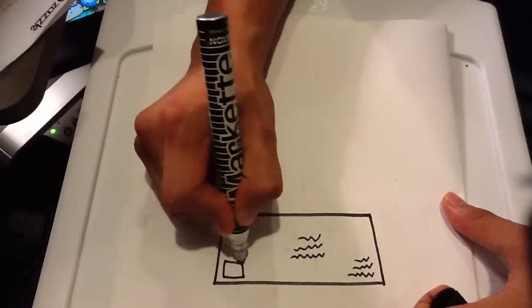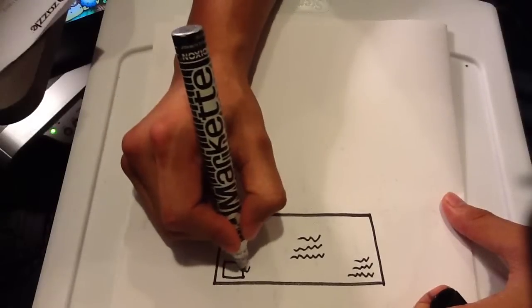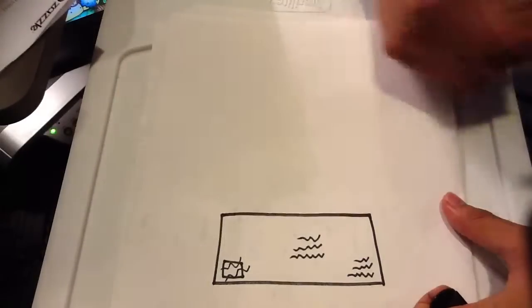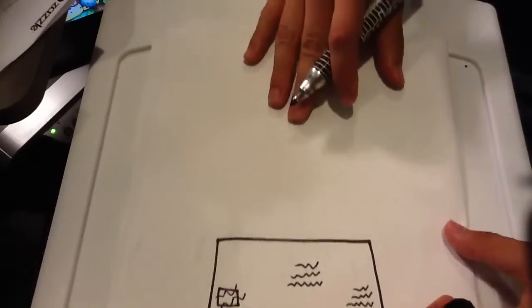And on the top right corner, draw a square. Make some wiggly lines through it like it's a stamp. That's the front.